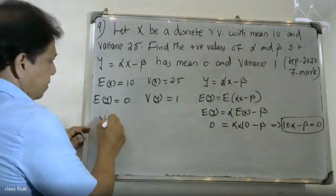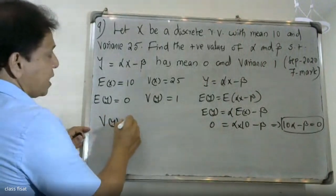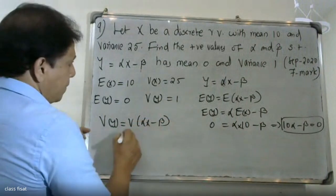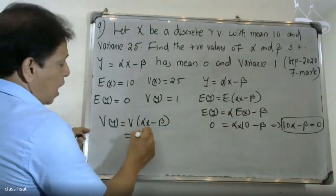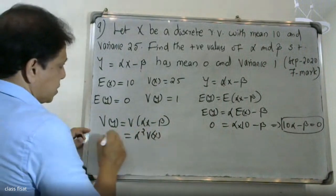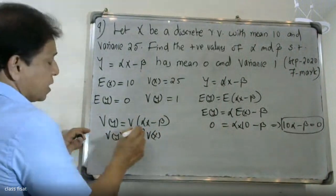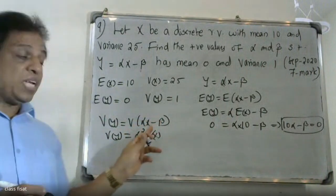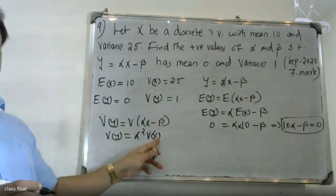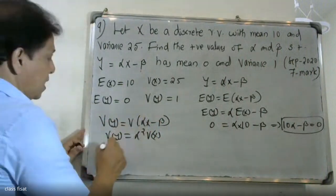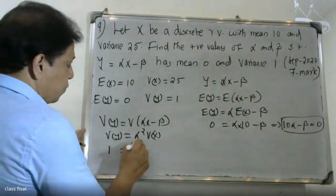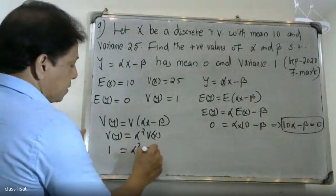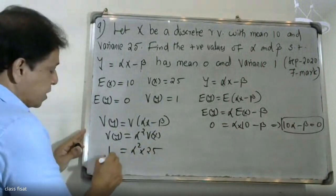Now for the variance of Y. Since Y equals alpha X minus beta, by the property of variance, variance of Y equals alpha squared into variance of X. Variance of Y is equal to 1, and variance of X is 25, so we get 1 equals alpha squared into 25.